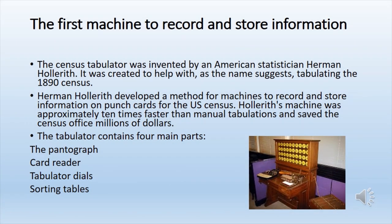The first machine to record and store information was the census tabulator, invented by American statistician Herman Hollerith. It was created to help tabulate the 1890 census. Hollerith developed a method for machines to record and store information on punch cards for the US census. His machine was approximately 10 times faster than manual tabulations and saved the census office millions of dollars.